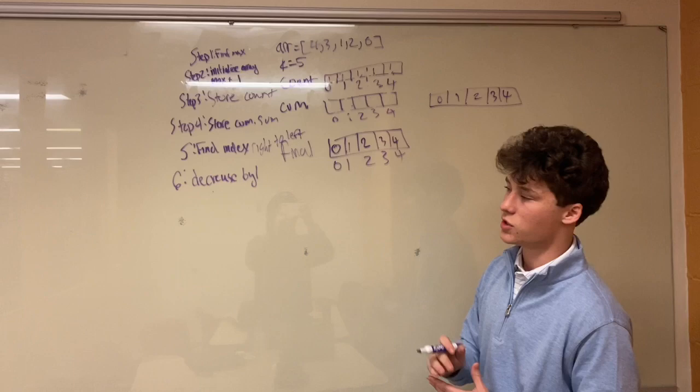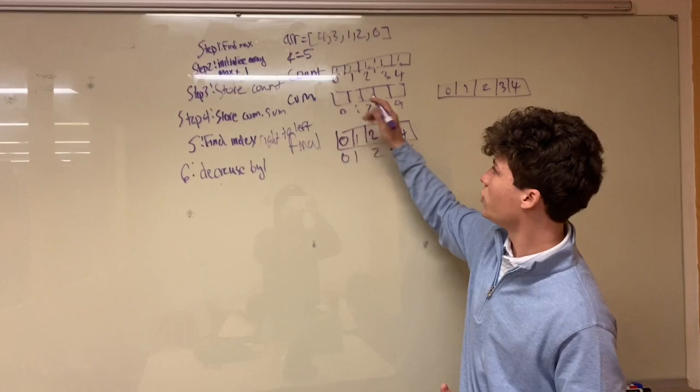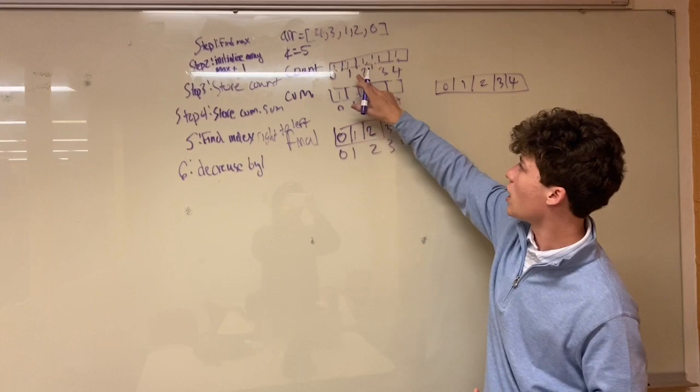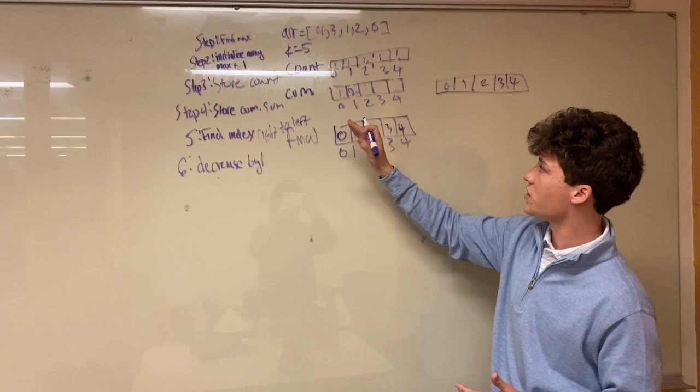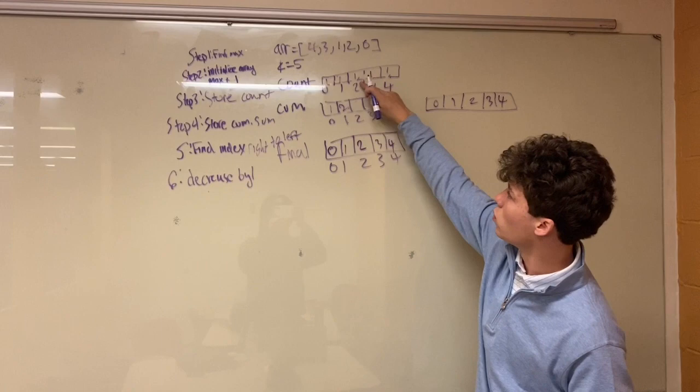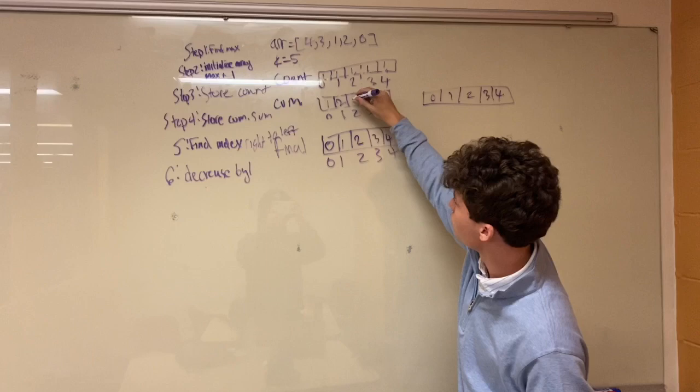So for 0, we just start with 1. So for 1, we look up, and we have 1, and then we have 1 below it. So we go 1 plus 1 equals 2 because there's 2 or less values equal to 1 in the count array. For 2, we go up to 1, so we have 1 plus these 2. So 1 plus 2 equals 3. And you just continue filling this in for the rest of this array for the cumulative sum.